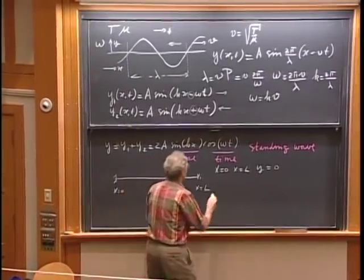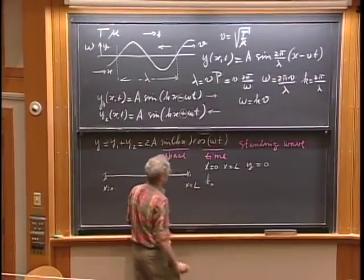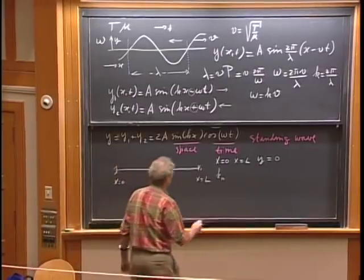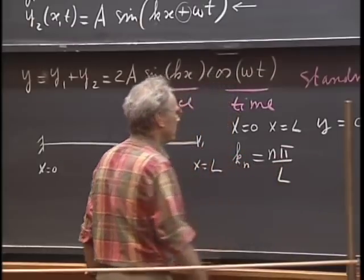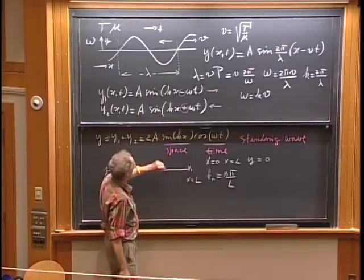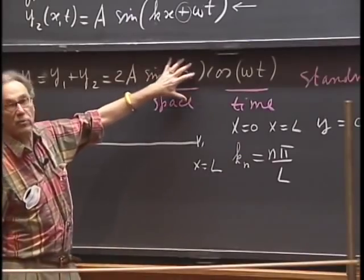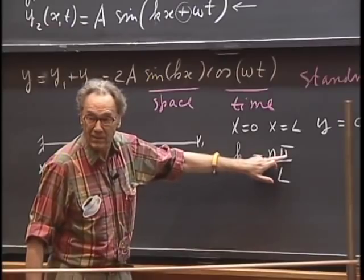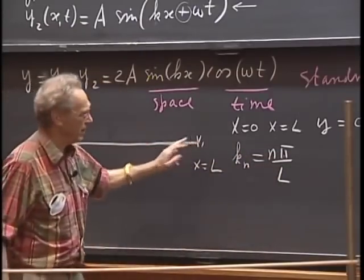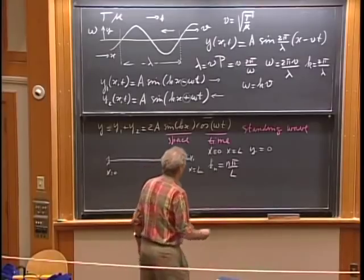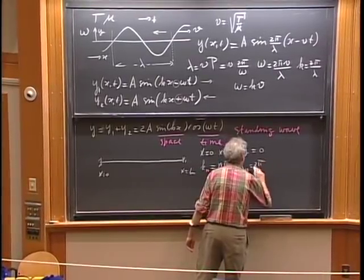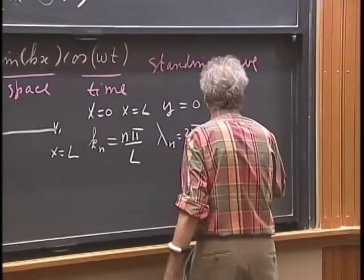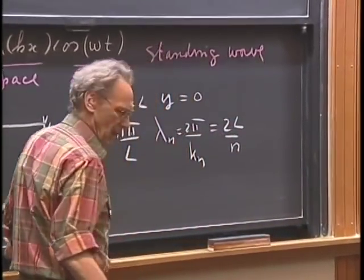Those allowed values are kₙ = nπ/L, where n = 1, 2, 3, 4, ... Clearly, when x = 0 the sine is zero, and when x = L you get sin(nπ) = 0, so the boundary condition is met. Therefore λₙ = 2π/kₙ = 2L/n. And ωₙ = kₙ · V = nπV/L. The frequency in hertz is fₙ = nV/(2L).